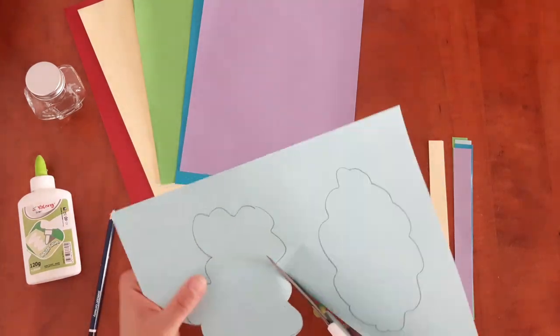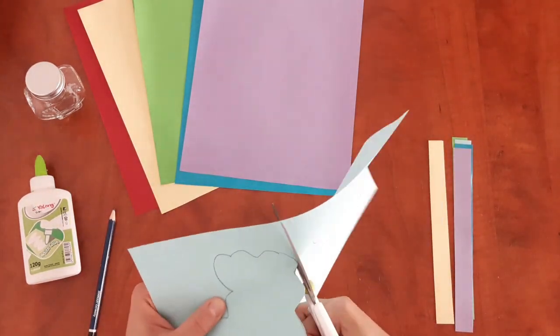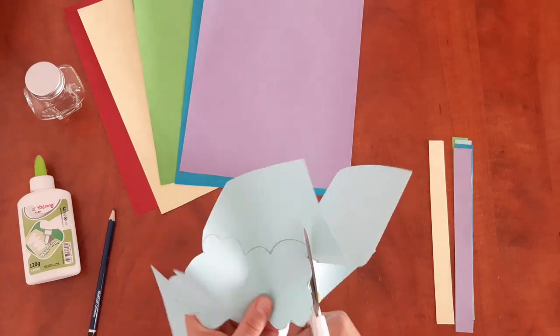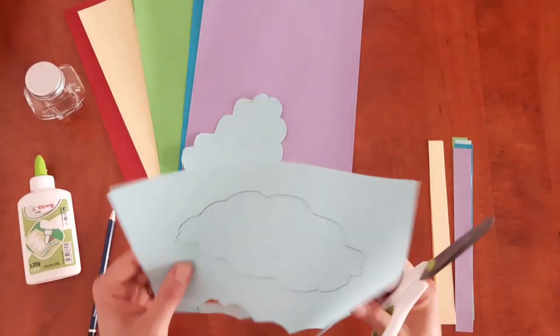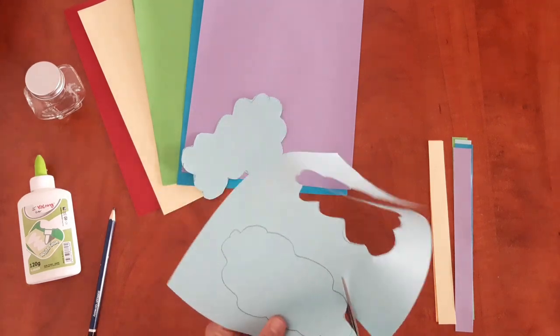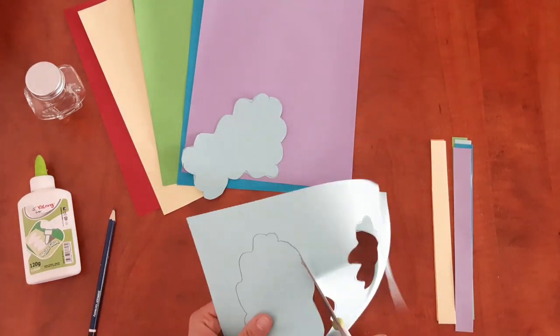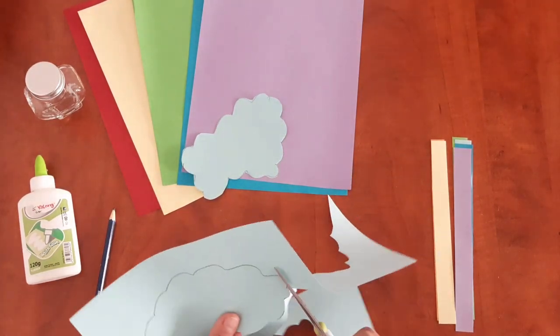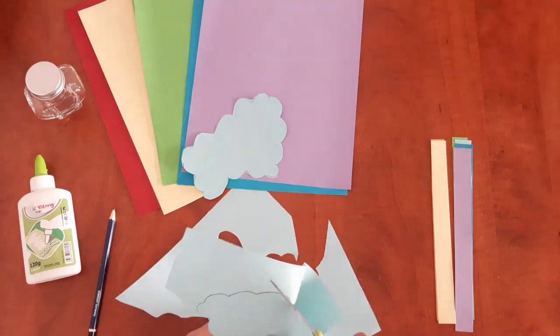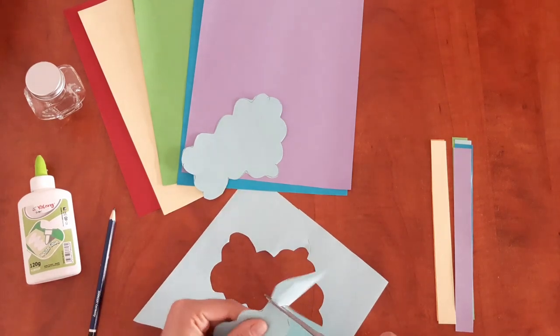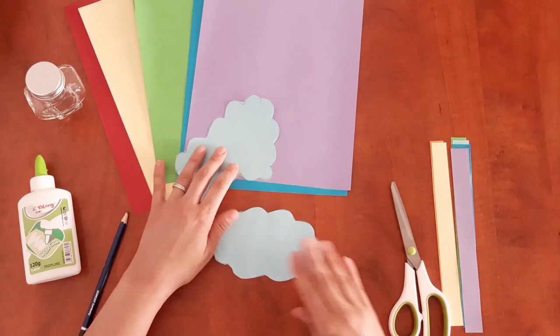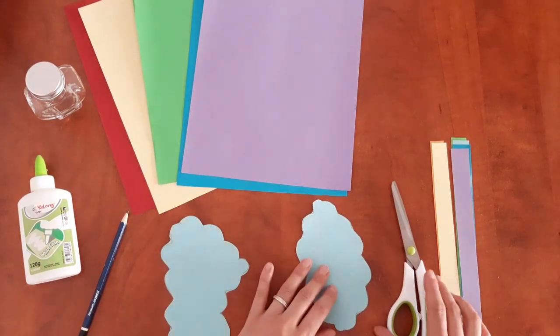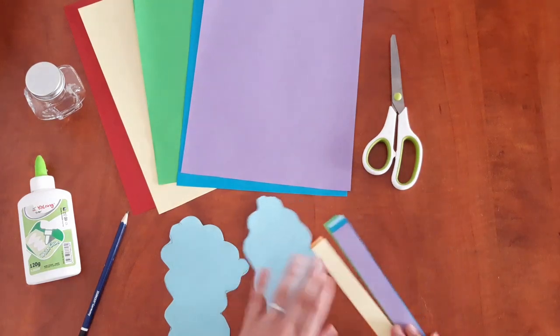We are going to glue on these clouds our strips so that we will create a 3D shape rainbow. I'm cutting my second cloud. Take your time, there's no rush.